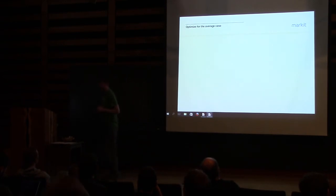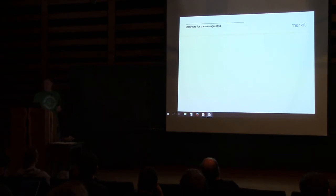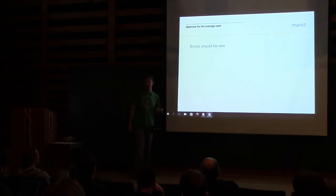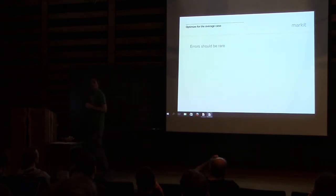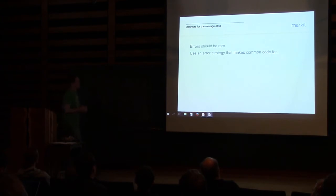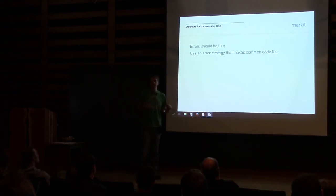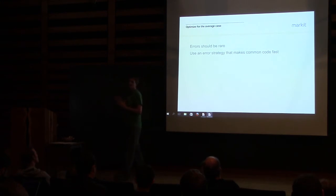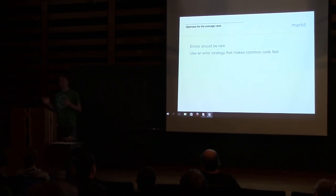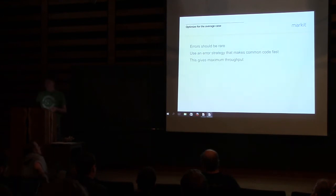When we optimize for the average case — the common case — errors should be rare. If your errors are not rare, you have a problem, and the solution isn't to write better error handling code, it's to find out why you have so many errors and fix that. This suggests using an error strategy that makes common code fast. The code you execute most often is the code that should run the fastest. This gives maximum throughput.